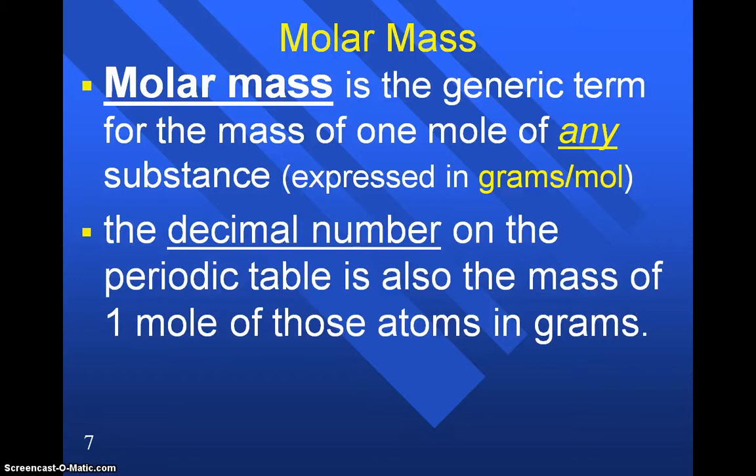And it's really easy to figure this out based on the definition of a mole. Remember that we said that a mole is the number of atoms in 12 grams of carbon-12. So essentially what we do is we take the decimal number on the periodic table, and we say that this is the mass of one mole of those atoms in grams.